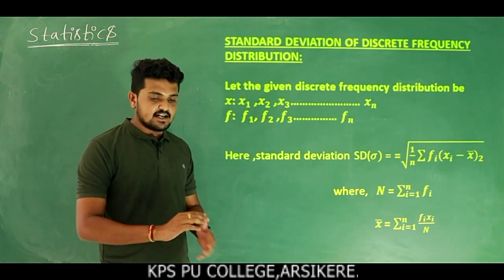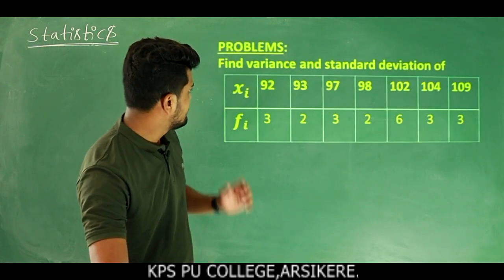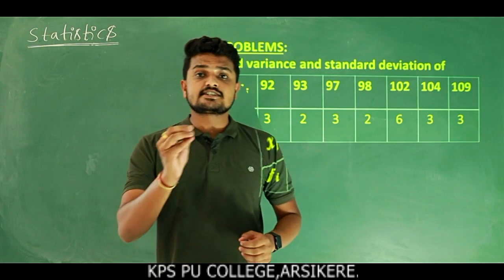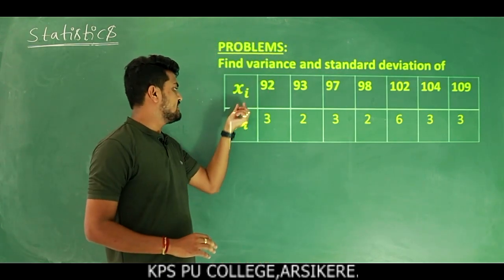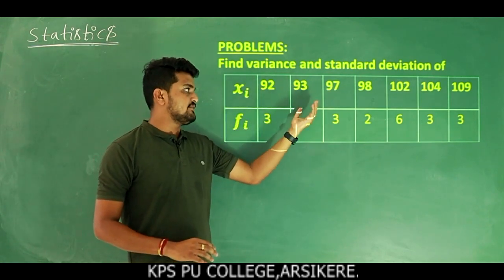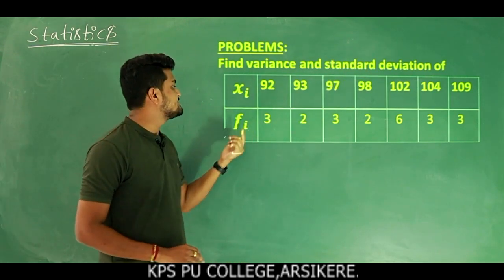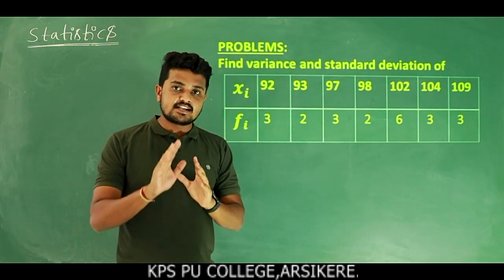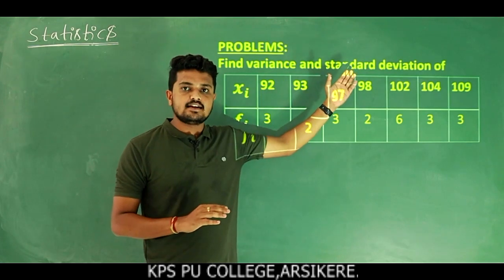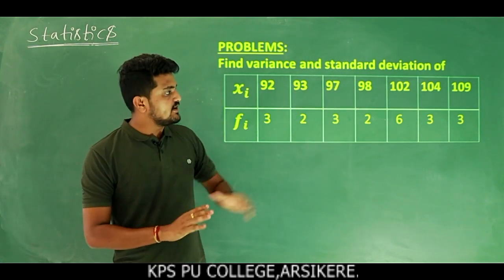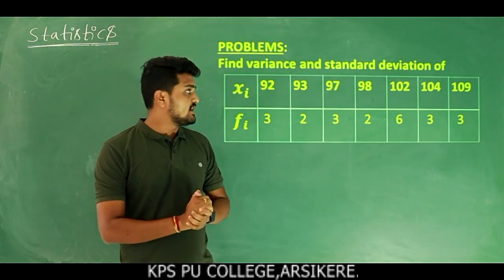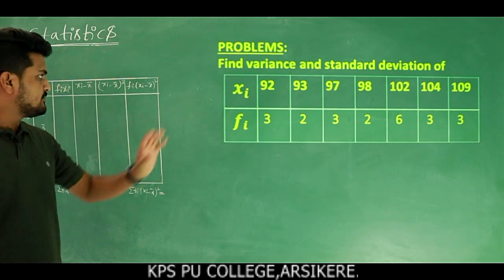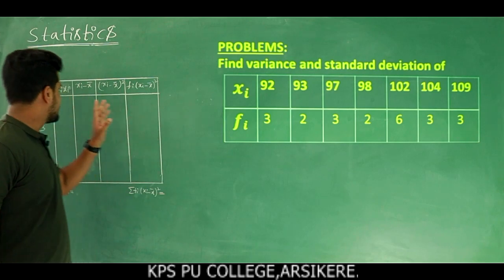Let us look at the first problem to understand this. Find the variance and standard deviation. The given discrete frequency distribution has xi values: 92, 93, 97, 98, 102, 104, 109 with corresponding frequencies: 3, 2, 3, 2, 6, 3, 3. For this problem, first we have to construct a table with columns xi and fi.